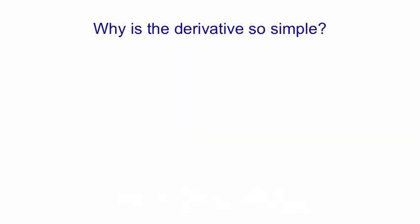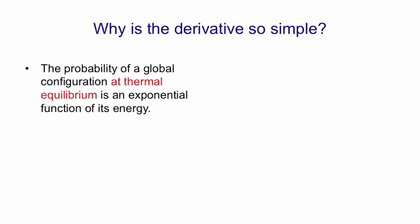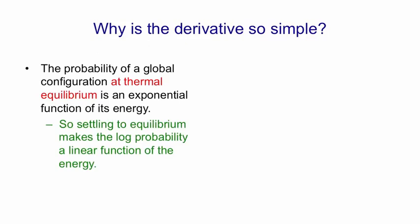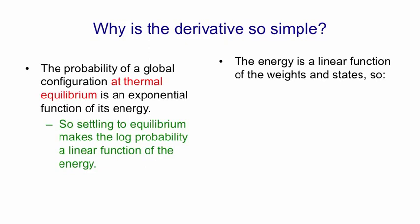One obvious question is why is the derivative so simple? Well, the probability of a global configuration at thermal equilibrium, that is, once you've let it settle down, is an exponential function of its energy. The probability is related to e to the minus energy. So when we settle to equilibrium, we achieve a linear relationship between the log probability and the energy function. Now the energy function is linear in the weights. So we have a linear relationship between the weights and the log probability. And since we're trying to manipulate log probabilities by manipulating weights, that's a good thing to have. It's a log linear model.